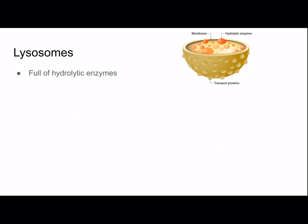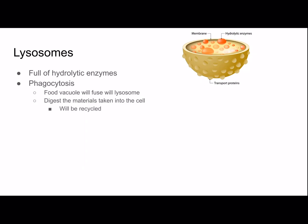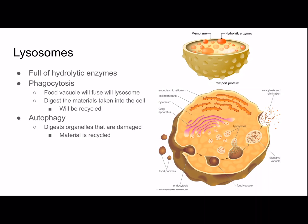Lysosomes are full of hydrolytic enzymes. They perform phagocytosis, where a food vacuole will fuse with a lysosome and digest the materials taken into the cell, and those materials will be recycled. Autophagy is where it digests organelles that are damaged — organelles that no longer function will basically be eaten up by these lysosomes. As you can see in this picture, there's a food particle that will get eaten and taken in by the cell through phagocytosis, then the food vacuole will fuse with the lysosome, and the lysosome will use its enzymes to break that food apart. Later there will be exocytosis — elimination of things it doesn't need.